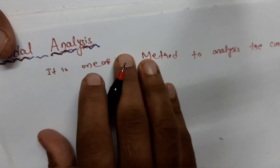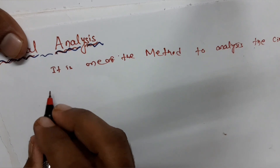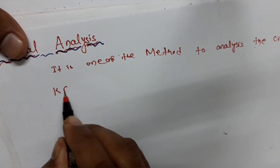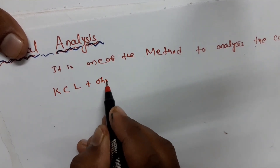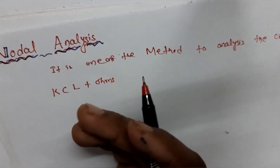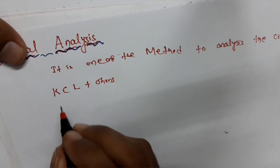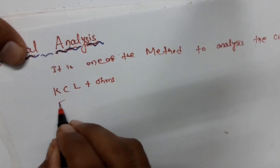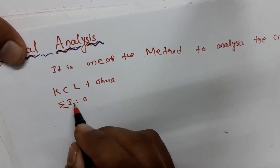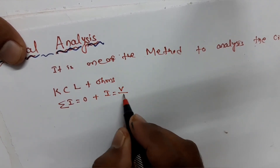In nodal analysis, we apply KCL plus Ohm's law. In the previous mesh analysis, we applied KVL plus Ohm's law. Here, node analysis uses KCL plus Ohm's law. KCL states that the summation of currents equal to zero — the algebraic sum of currents at a node is zero — and I equals V divided by R.